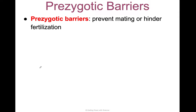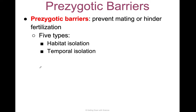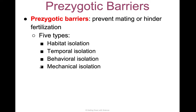Prezygotic barriers prevent mating at all, or they hinder fertilization — mating between individuals can take place, but there's no fertilization. There are five types: habitat isolation, temporal isolation, behavioral isolation, mechanical isolation, and gametic isolation.